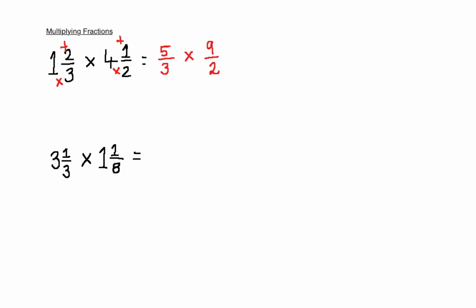The second step now is to seek any potential cancelling factors — if there are any numbers that you can cancel down to make the calculation a little easier. Here, you can cancel the 9 down along with the 3. Both these numbers, 1 from the numerator and 1 from the denominator, can be divided by 3. 9 divided by 3 is 3, and 3 divided by 3 is 1. There are no other numbers that can cancel; 5 and 2 don't divide by anything, and 3 and 1 do not either.